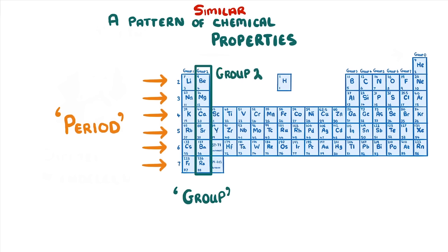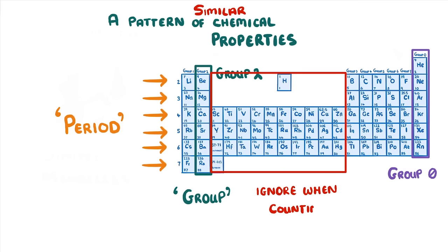There are a couple of exceptions to this though. One is that the far right group is called group 0, rather than group 8, and we'll take a closer look at why this is in a minute. The other is that the block of metals between group 2 and 3 don't have group numbers. Don't worry about this for now though, just remember to ignore them when counting your groups.